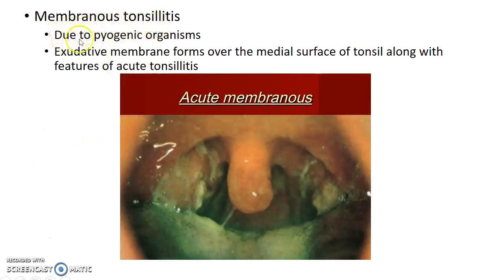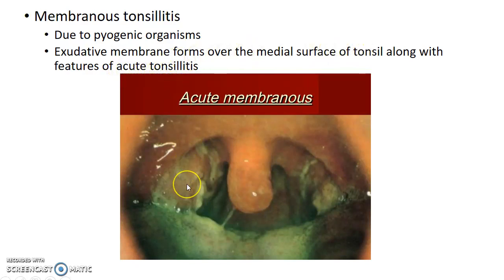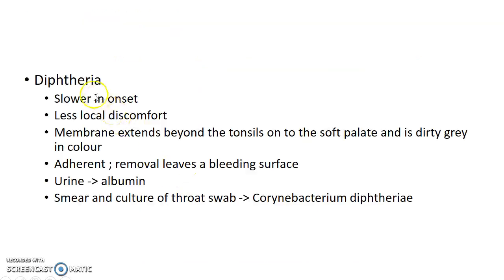Now let us see about each of these conditions in detail. Membranous tonsillitis is usually caused due to pyogenic organisms. An exudative membrane forms over the medial surface of the tonsil, along with features of acute tonsillitis. This is how a patient with acute membranous tonsillitis presents to you.